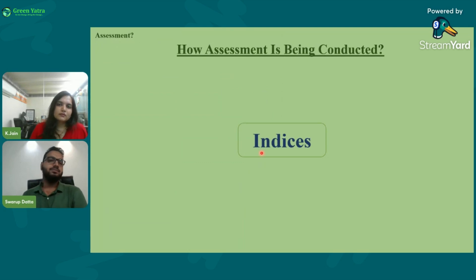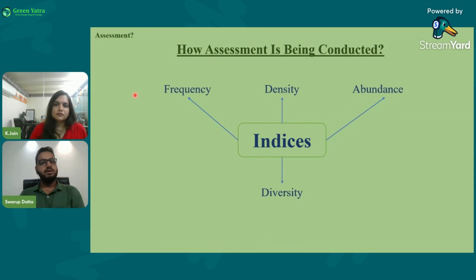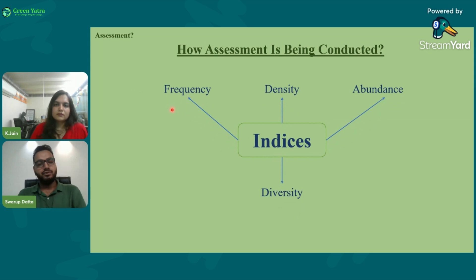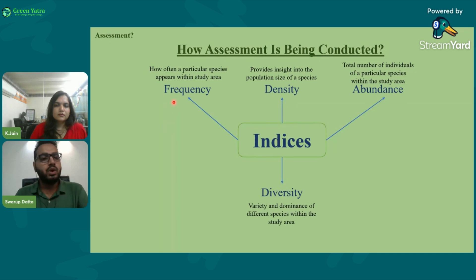Now, how is the assessment conducted? The main indices we use to assess biodiversity are frequency, density, abundance, and diversity.